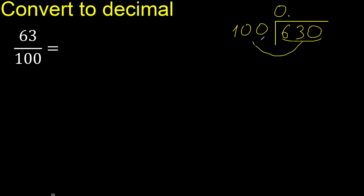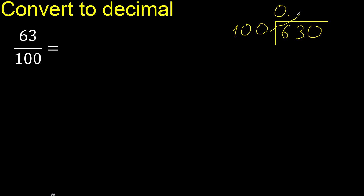100 is not less. 100 multiplied by which number is nearest to 630 but not greater? 100 multiplied by 7 is 700, which is greater. Multiplied by 6 is 600, which is not greater.